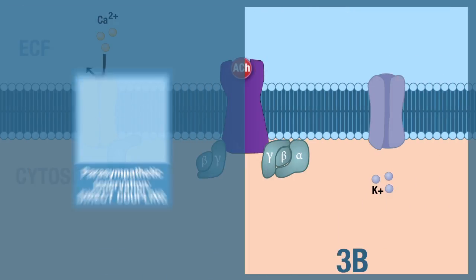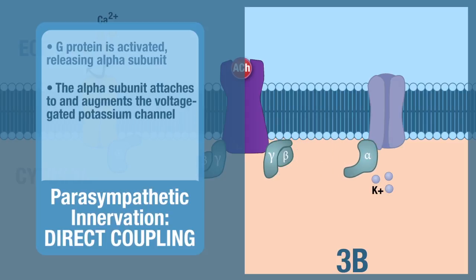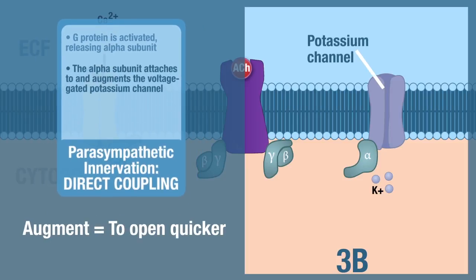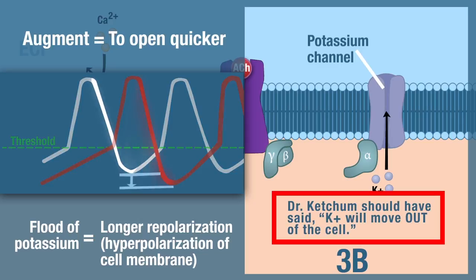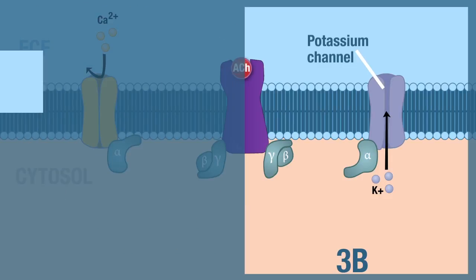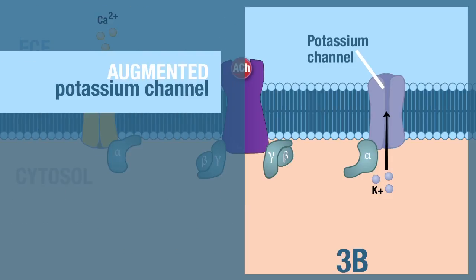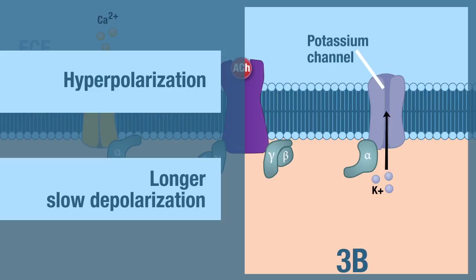Now at step 3B, when the G protein is activated and the alpha subunit slides over, it augments the voltage-gated potassium channel. If the potassium channel is augmented, it opens more quickly, causing a flood of potassium to come into the cell. This causes a longer repolarization, and actually the membrane will hyperpolarize. Normally in a pacemaker we don't have hyperpolarization, but because these voltage-gated potassium channels are augmented, the cell hyperpolarizes and you also have a longer slow depolarization.